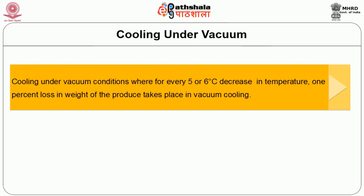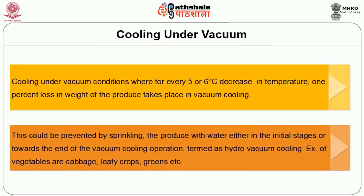Chlorinated water can also be used to prevent spoilage as well as to clean the crop. Hydro cooling is applied for hard and root vegetables because it is not suitable for succulent vegetables and fruits. The next method is vacuum cooling, where for every 5 or 6 degree Celsius decrease in temperature, 1% loss in weight of the produce takes place. This could be prevented by sprinkling the produce with water either in the initial stages or towards the end of the vacuum cooling operation, which is termed hydro vacuum cooling. Examples of vegetables that could be stored in this method are cabbage, leafy crops, and greens.